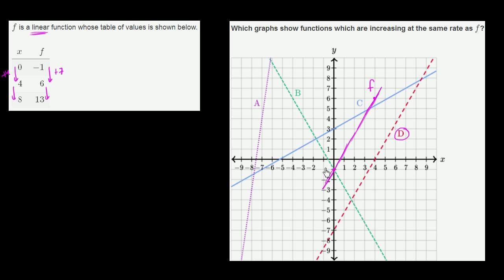And we could even verify it even if we didn't draw it in this way. Our change in f for a given change in x is equal to, when x changed plus 4, our function changed plus 7. It is equal to 7 fourths.